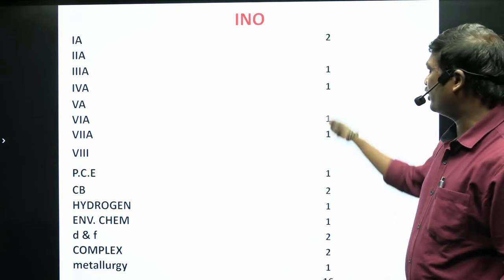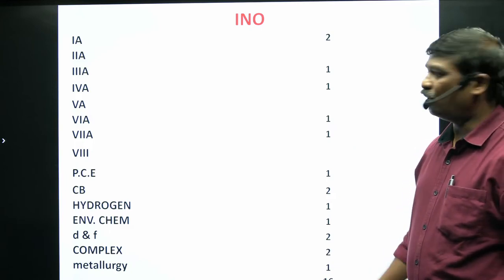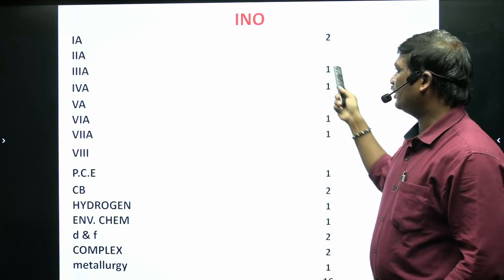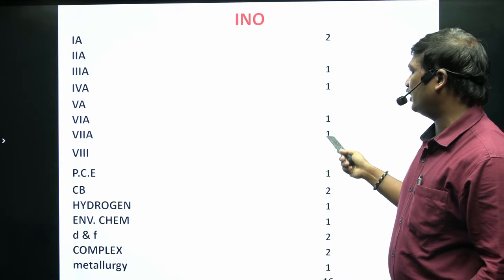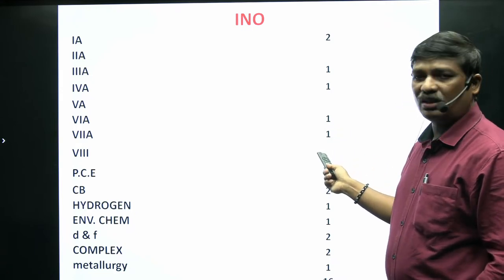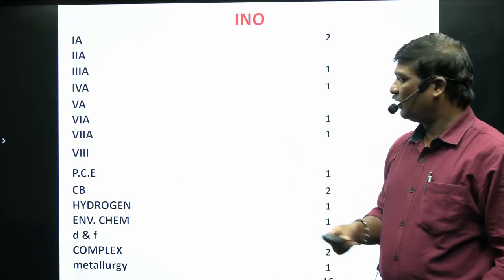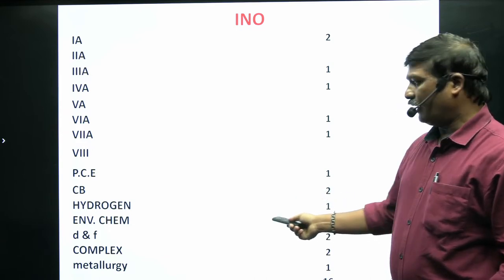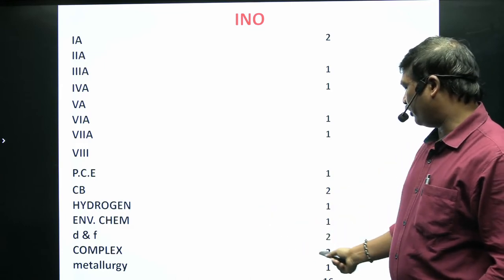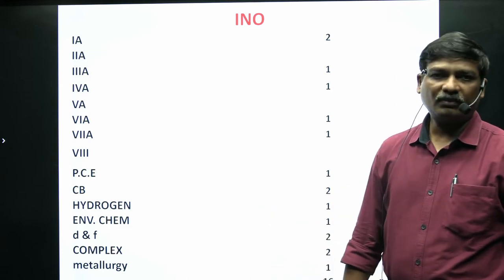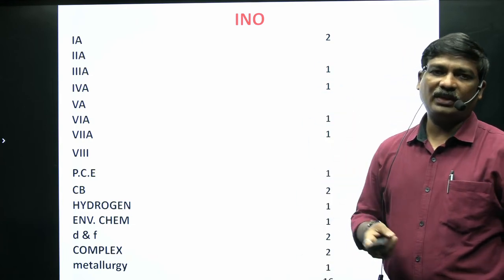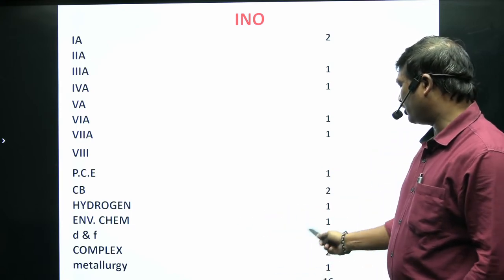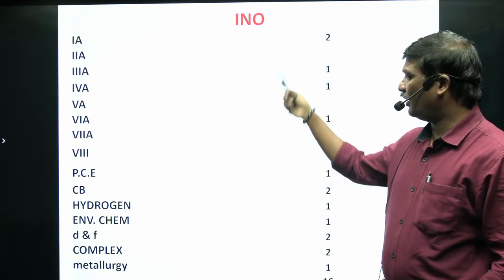For chapter-wise inorganic chemistry analysis: s-block gave 2 questions (only Group 1, not Group 2); Group 3 gave 1 question; Group 4 gave 1 question; Group 6 gave 1 question; Group 7 gave 1 question. Periodic classification gave 1 question, chemical bonding 2 questions, hydrogen compounds 1 question, coordination chemistry 1 question, d and f block 2 questions, complex compounds 2 questions, and metallurgy 1 question (a matching question on names and formulas).